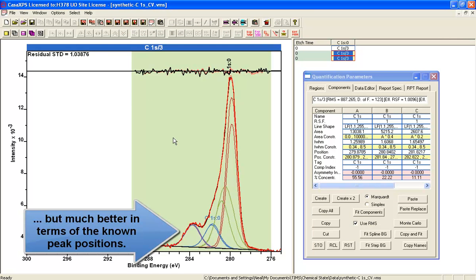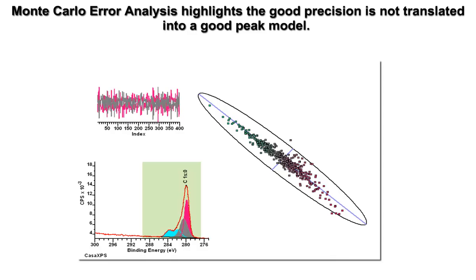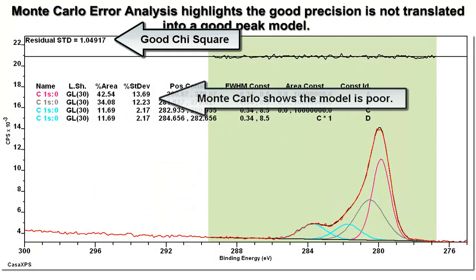It's improved over the GL50 without constraints. So you can introduce constraints to improve the quality of your peak fit. But it's very, very difficult to come up with the right answer based on the residual standard deviation. In fact, the Monte Carlo method for looking at error analysis indicated this peak model was, in fact, really quite bad.